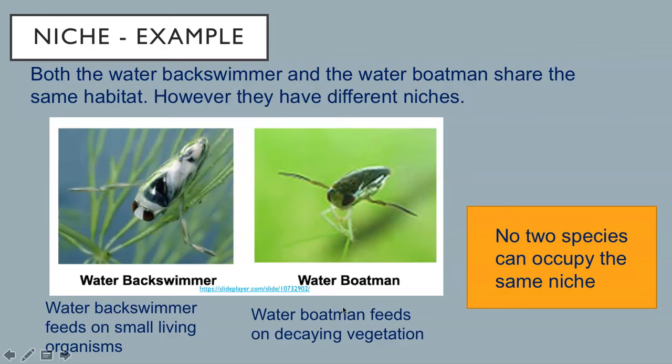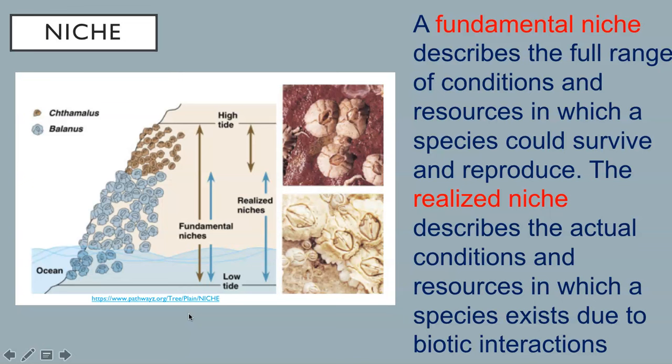You must realize that no two species can occupy the same niche. And because no two species can occupy the same niche, there are fundamental and realized niches. A fundamental niche describes the full range of conditions and resources in which a species could survive and reproduce. The realized niche describes the actual conditions and resources in which a species exists due to biotic interactions.